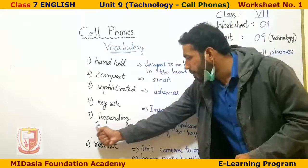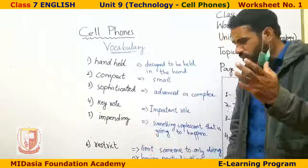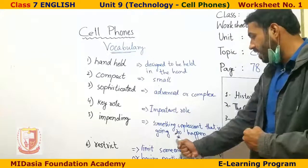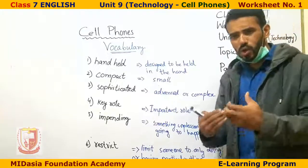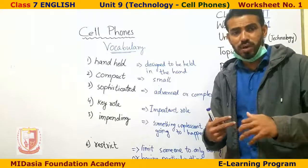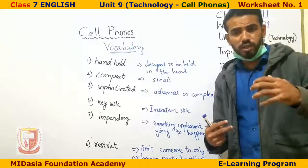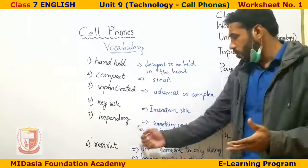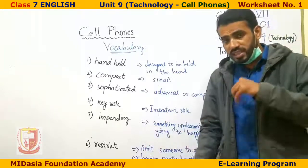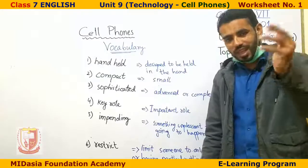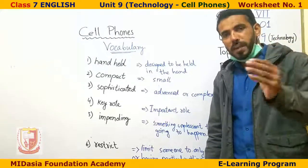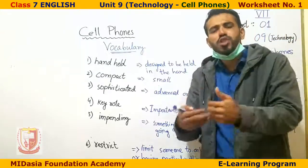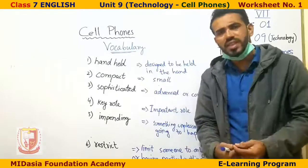The next word is 'impending.' Impending means something unpleasant that is going to happen — koi cheez jo hone wali hai. For example, if an earthquake or a natural disaster is about to come, that is an impending disaster. In this lesson you will also learn about forecasting — how it is done. Impending means something that is about to happen.